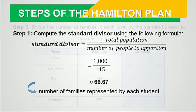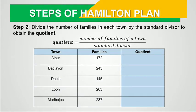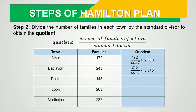The second step is to divide the number of families of each town by the standard divisor to obtain the quotient. We'll limit answers to three decimal places for convenience. In Albor, 172 divided by 66.67 is approximately 2.580. In Baclayon, 243 divided by 66.67 is approximately 3.645. In Daoist, 145 divided by 66.67 is approximately 2.175.